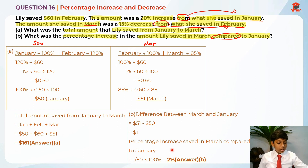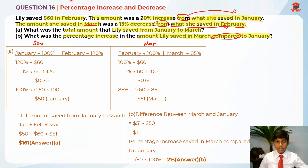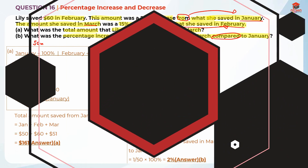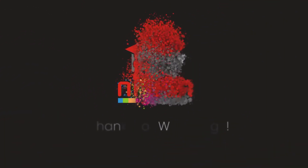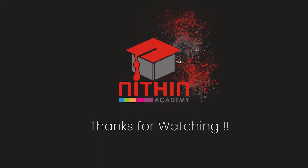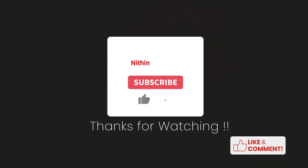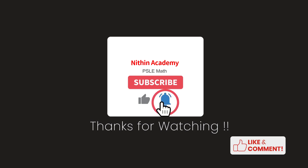The percentage increase for Part B is 2%. I hope you understand my explanation for Question 16, Part A and B. Thank you and bye-bye! I'll see you in my next video. Bye!